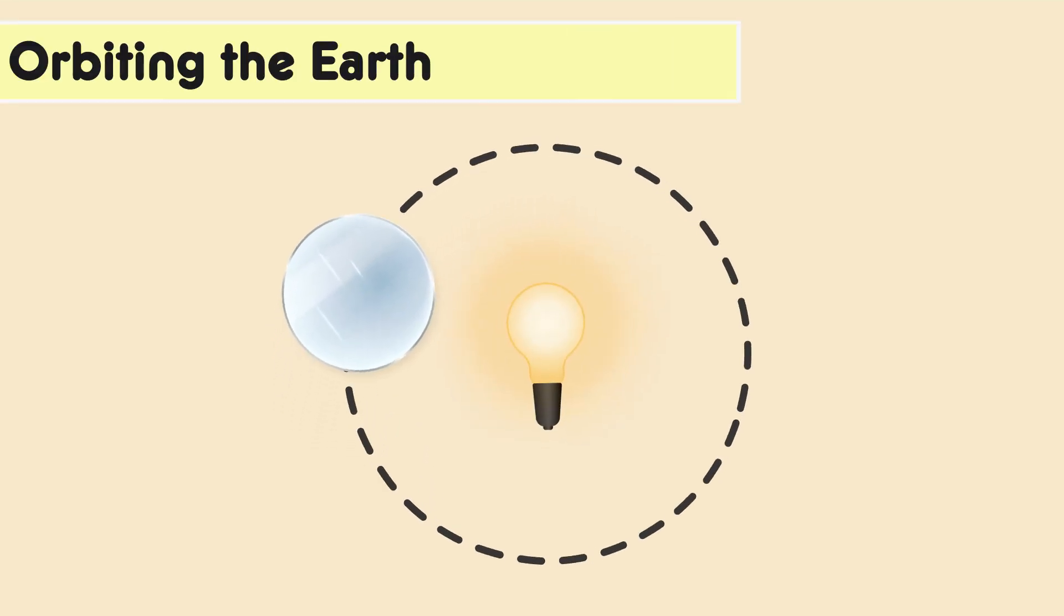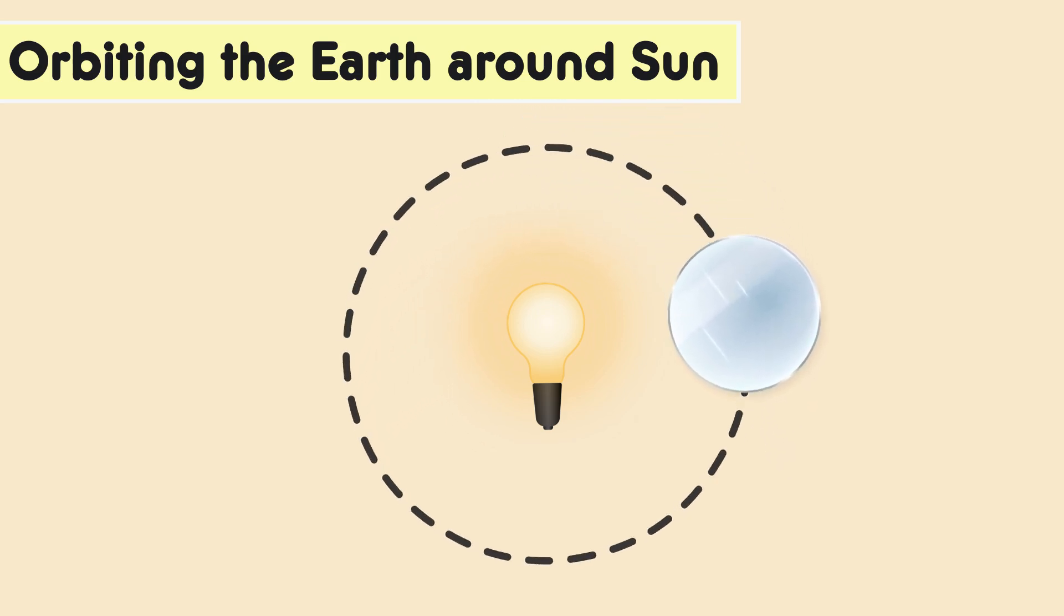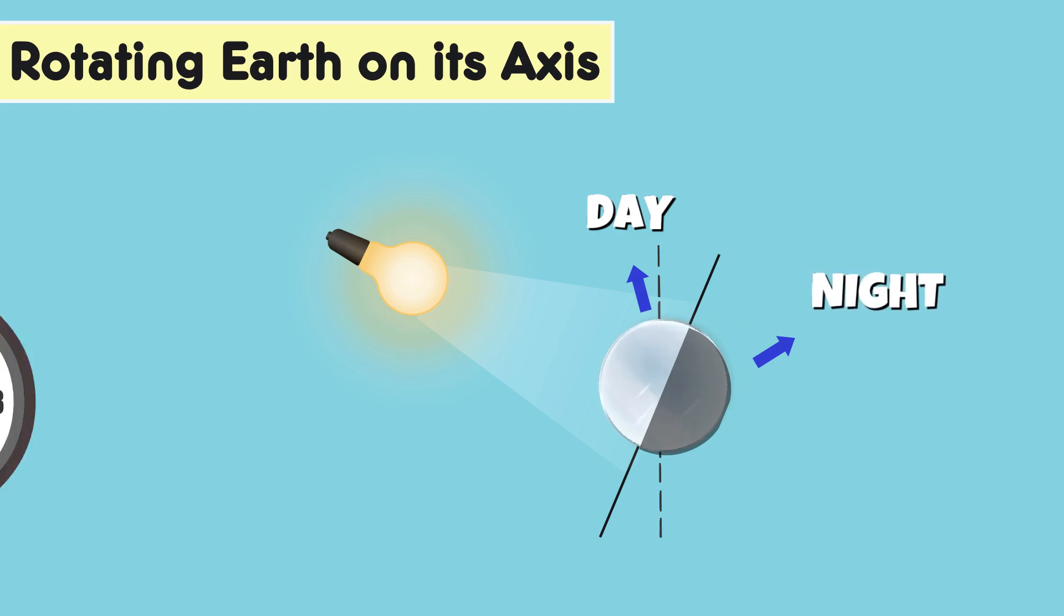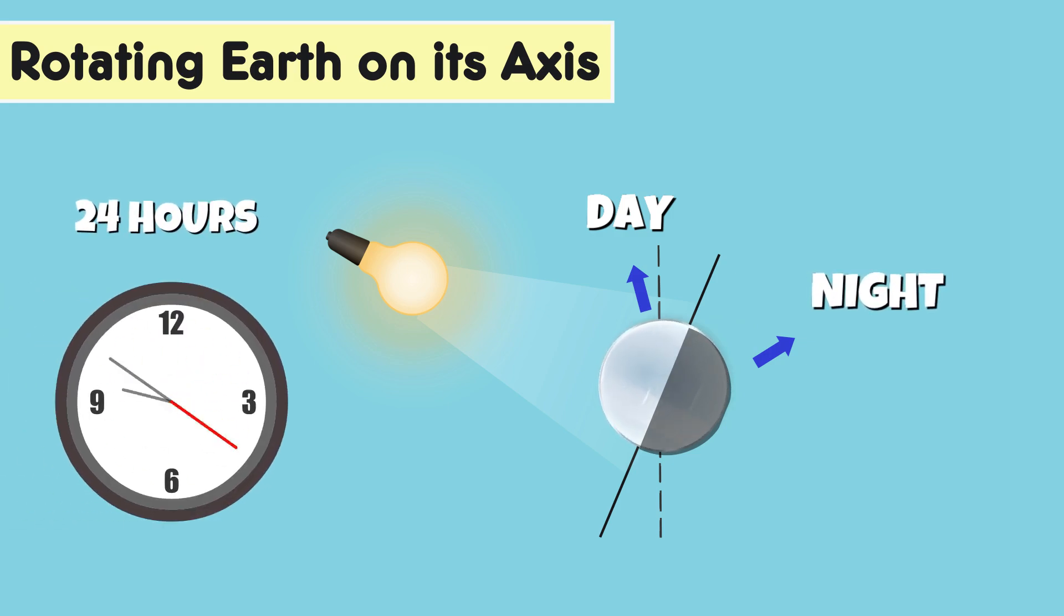Orbiting Earth around the Sun shows our planet's annual journey, which explains seasons and the passage of a year, but does not directly explain the day-night cycle. Rotating Earth on its axis mimics the actual rotation of our planet. This rotation causes different parts of Earth to face towards or away from the Sun, leading to day and night over a 24-hour period.